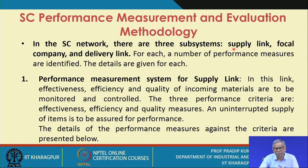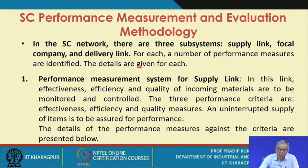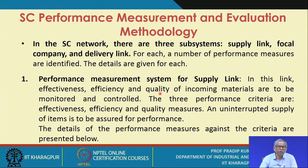There are three specific subsystems you need to consider: the first one is the supply link, then you have the focal company, and then you have the delivery link. For each of these subsystems, a number of performance measures are to be identified. For the supply link, three important dimensions of performance need to be considered: effectiveness, efficiency, and quality. Performance is a multidimensional concept, and there are seven dimensions: efficiency, effectiveness, quality, quality of work life, innovation, productivity, and profitability.